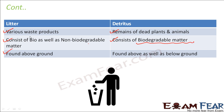Litter is found above the ground, whereas detritus is found above as well as below the ground, because when the process of decomposition takes place, it happens below the ground. That is how litter and detritus differ from each other.